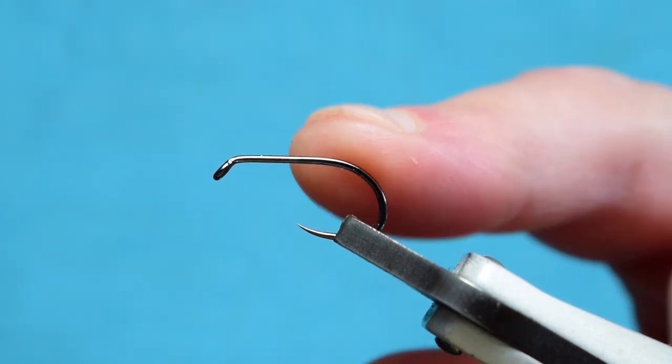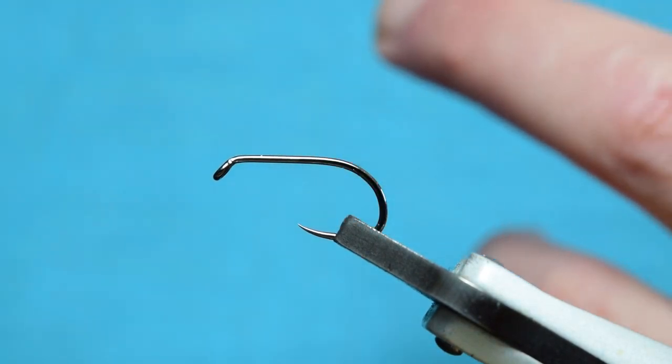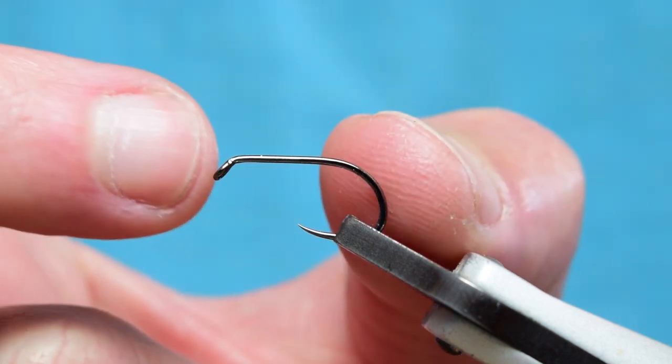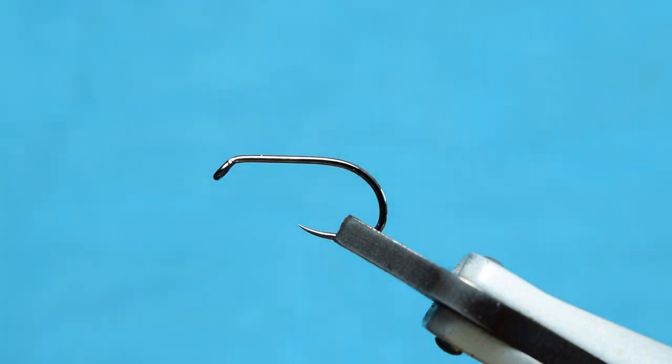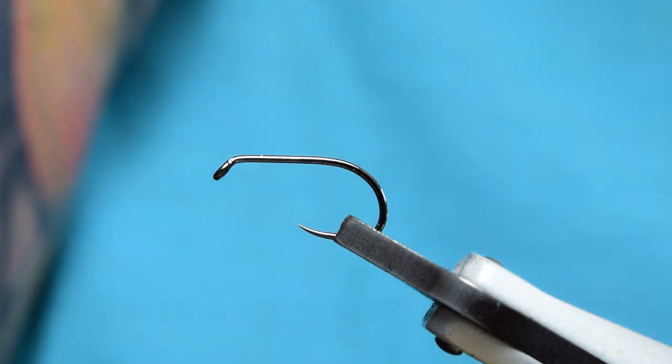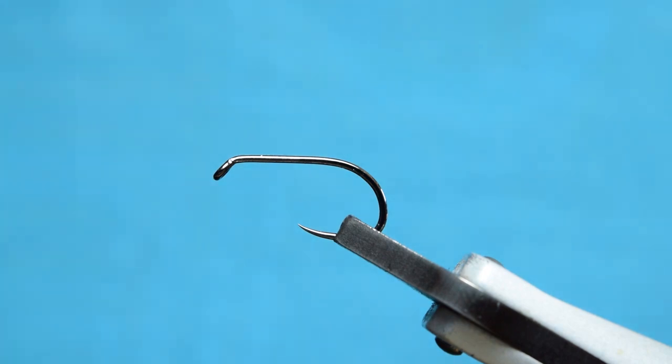We're going to start off with this, actually quite a big hook, it's a size 10. But some of the buzzers this time of year, especially the early season ones, are quite big. Some of these buzzers are getting on for a centimeter plus in length, so they're quite big buzzers.